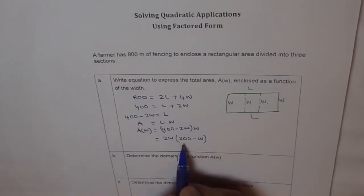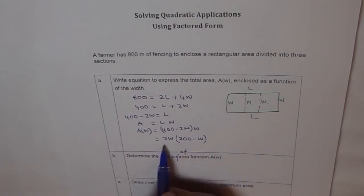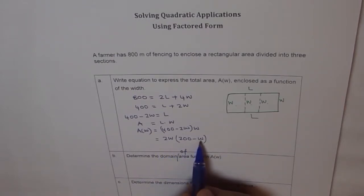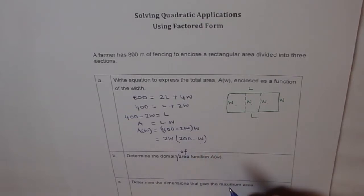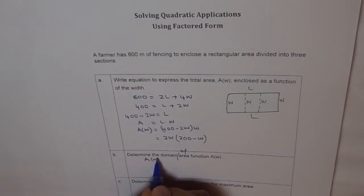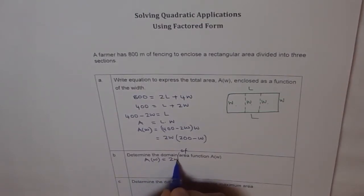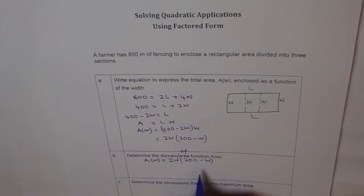So we have to find domain of area function A(W). What is the value of width which we can have? So as you can see from this equation, if W is more than 200, then this factor will become negative. So maximum value which W can have is 200.